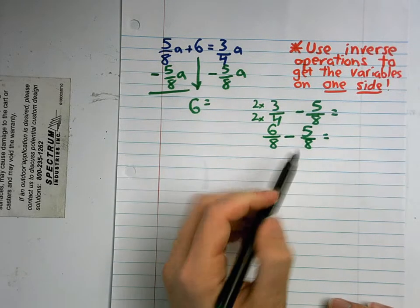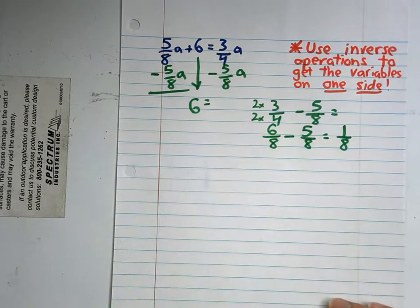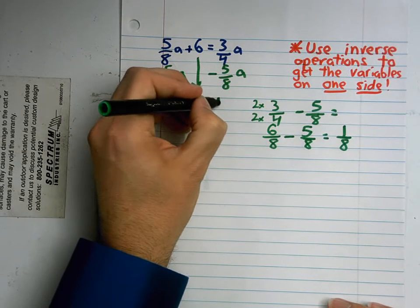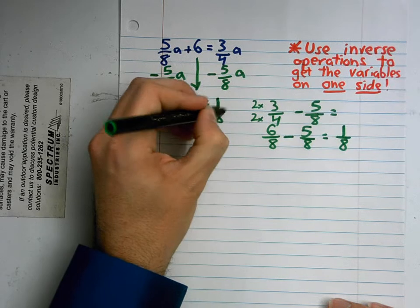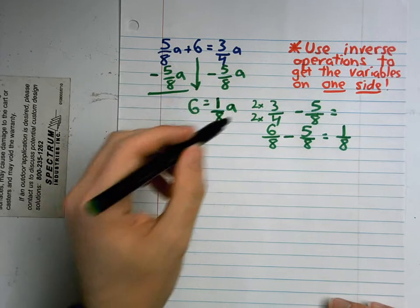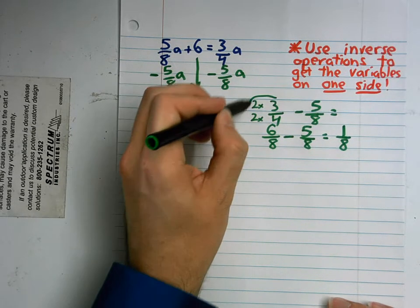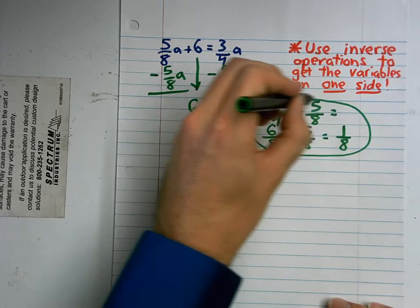6/8ths minus 5/8ths equals 1/8th. So I have 1/8th a. I'm going to circle this so we know that we're done with this part.